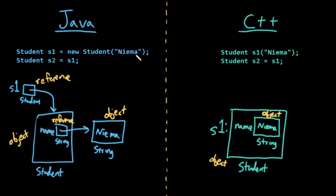So in Java, when I created this object, I was actually creating some object, and S1 was just a reference to that object. In the C++ version, S1 actually is the name of this object itself. S1 is not a reference to an object — S1 is the object.